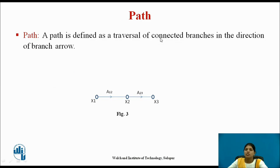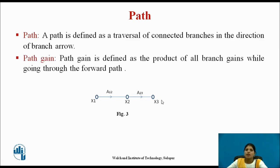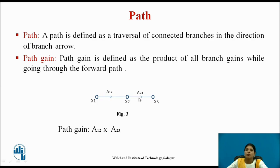The next terminology is path. A path is defined as a traversal of connected branches in the direction of branch arrows. This is a path from x1 to x3, where x1, x2, and x3 are the nodes. Path gain is defined as the product of all branch gains while going through the forward path. For the forward path from x1 to x3, the path gain equals a12 multiplied by a23.